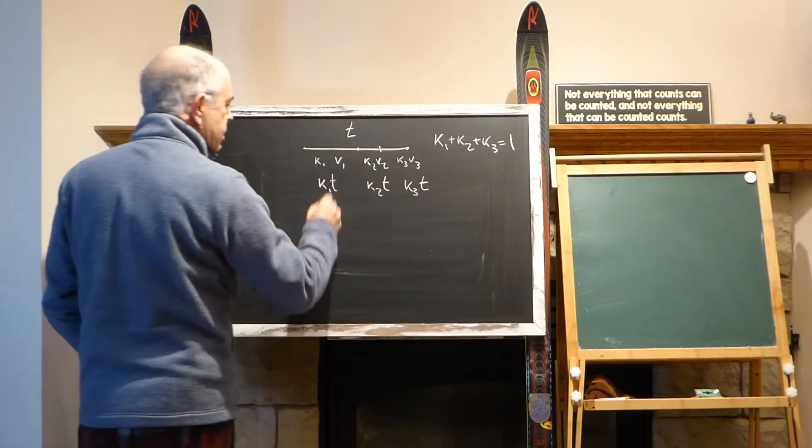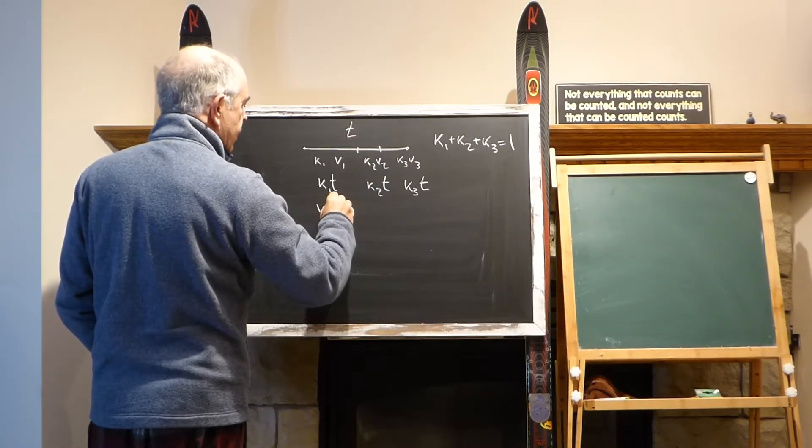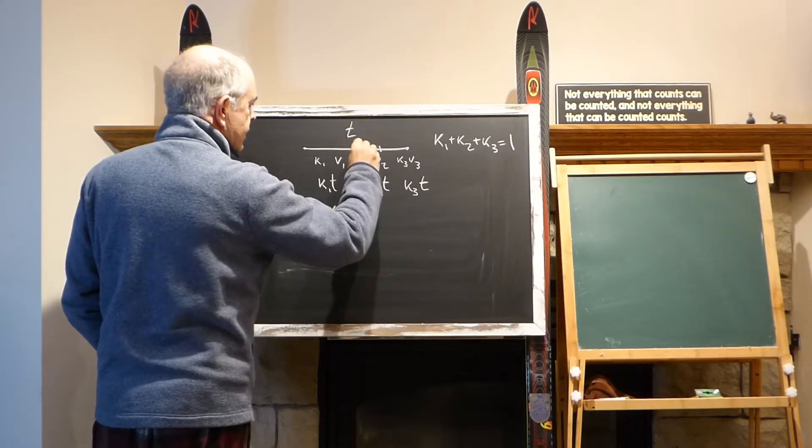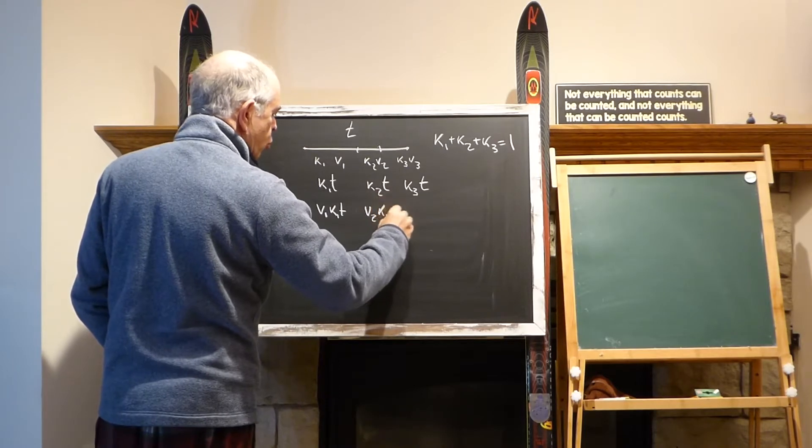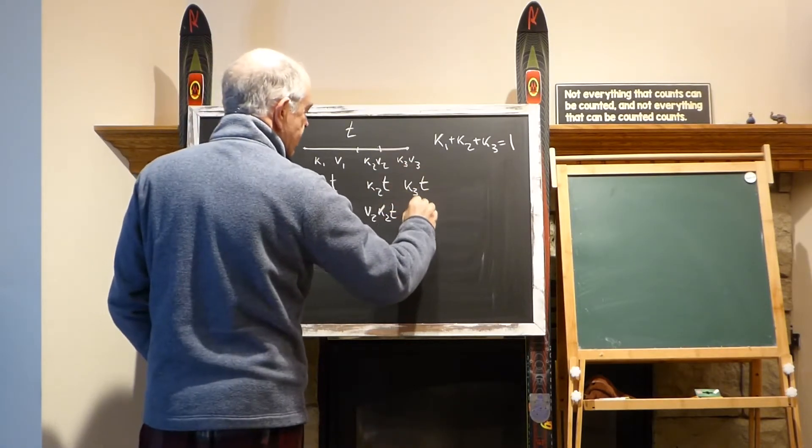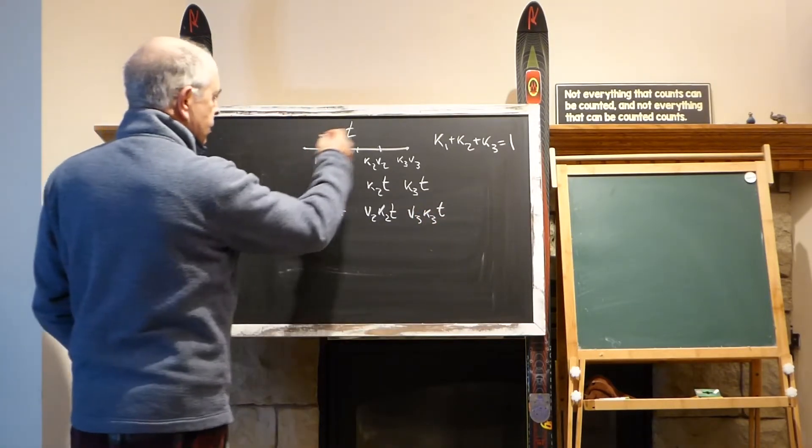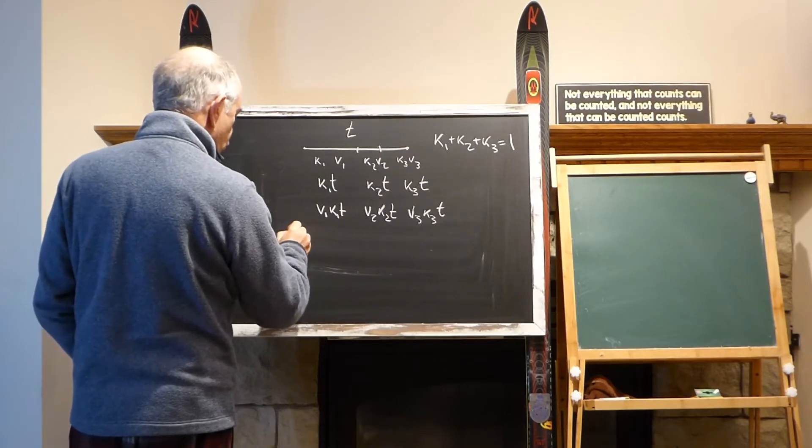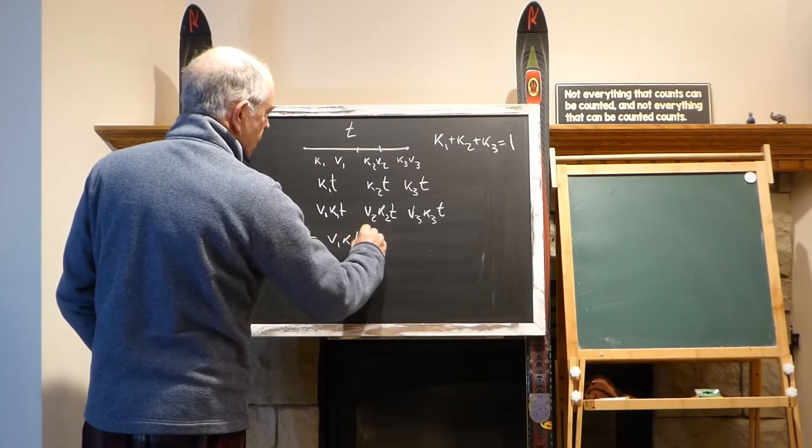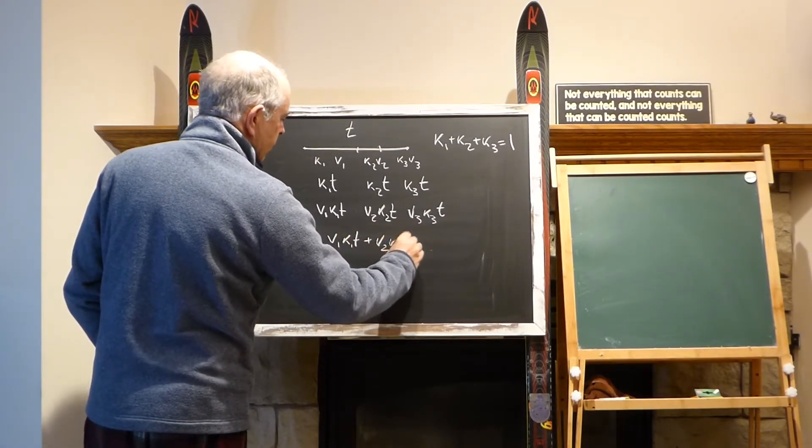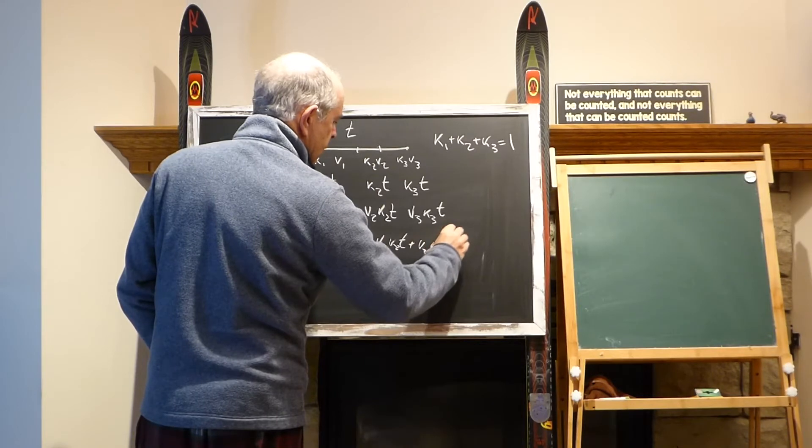Those are real times, so the distance covered from here to here is v1 multiplied by k1*t. This distance is v2 multiplied by k2*t, and this distance is v3 multiplied by k3*t. I just simply add those together.